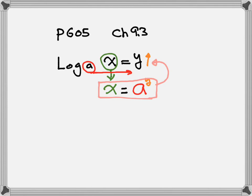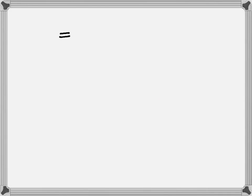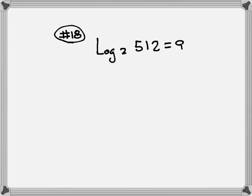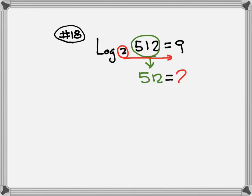Let's look at number 18. We have log base 2 of 512 is equal to 9. So here they are giving us in log, wanting to change to exponential. So keep the equal sign. The x position is the 512, so 512 drops straight down. After that, you take your base. The base is the little 2, and the 2 is going real fast to the other side, so it becomes a big 2. Then you bump the 9 up to become the exponent, so it becomes 2 to the 9th power. If you use your calculator to take 2 to the 9th power, it will give you 512.